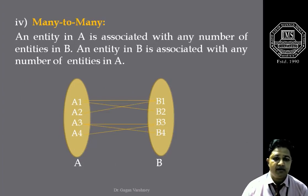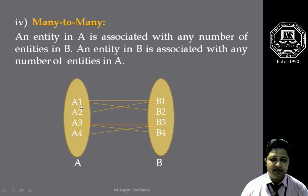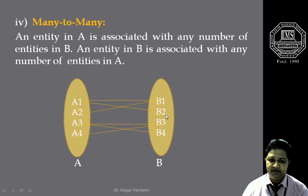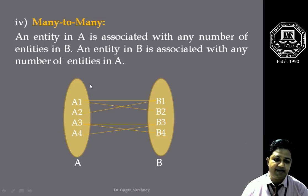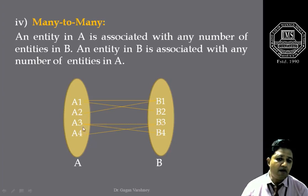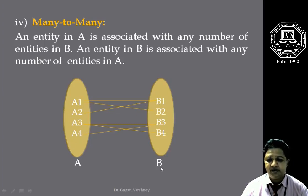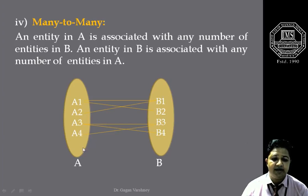Next is called many-to-many mapping cardinalities. In this, any number of entities in entity set A can be associated with any number of entities in entity set B. Similarly, an entity in entity set B can be associated with any number of entities in entity set A. As it is clear from the diagram below, all entities of entity set A can be associated with any number of entities in entity set B, and all entities of entity set B can be associated with any number of entities in entity set A.